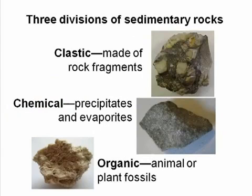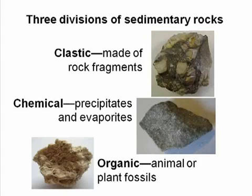Sedimentary rocks are classified into three divisions: clastic, chemical, and organic. Some systems merge chemical and organic into the chemical-organic division, or the biochemical division. Clastic means made of rock fragments. So, clastic division rocks are broken pieces of rock that have been compacted and cemented together.